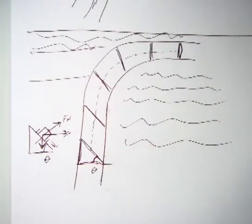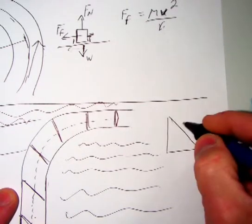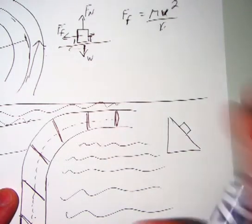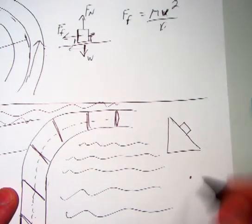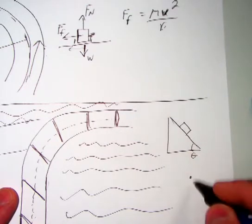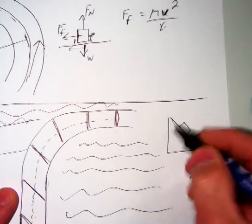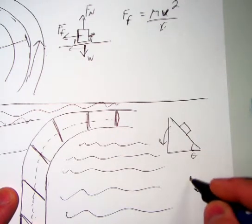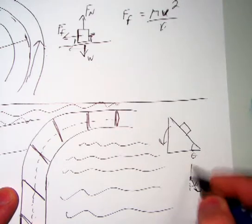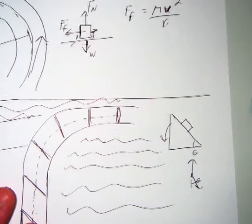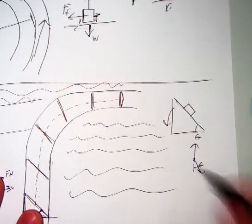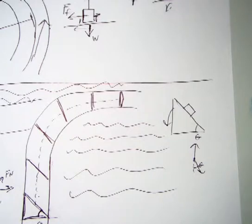Gravity is pulling the car down. The road bed splits gravity so you have a component pulling downwards and a component pushing back into the road surface. But that's not what's causing the car to go around the curve. What's causing the car to go around the curve is the normal force — specifically, the component of the normal force directed along the x-axis that's actually providing our centripetal force.